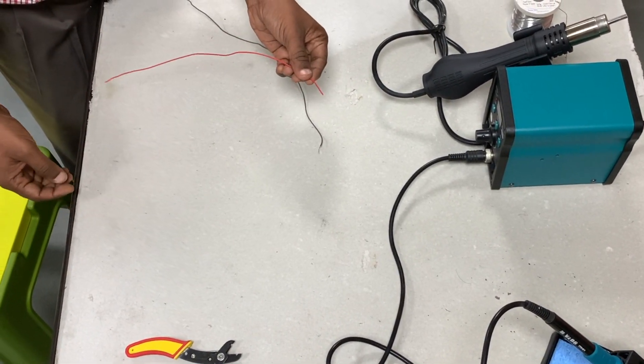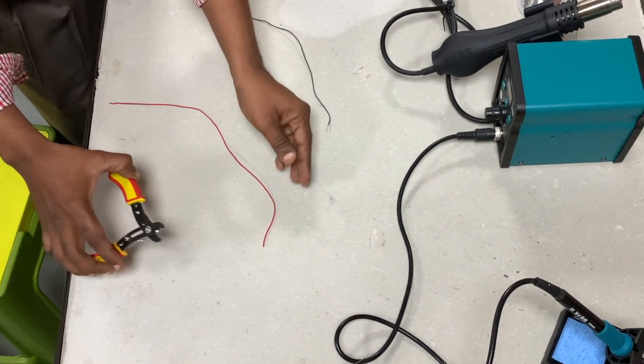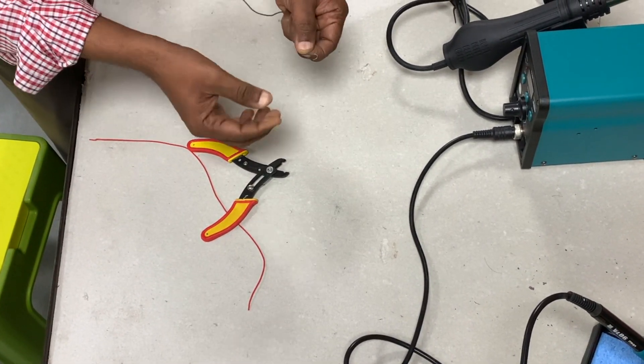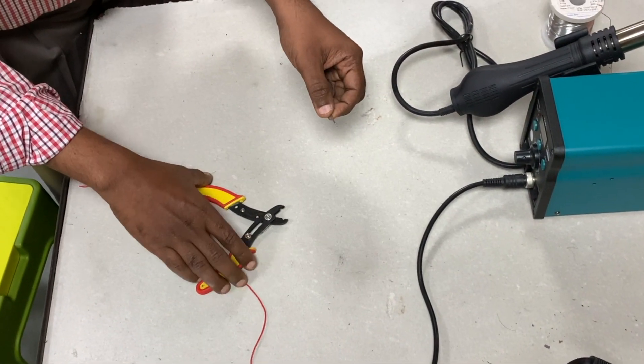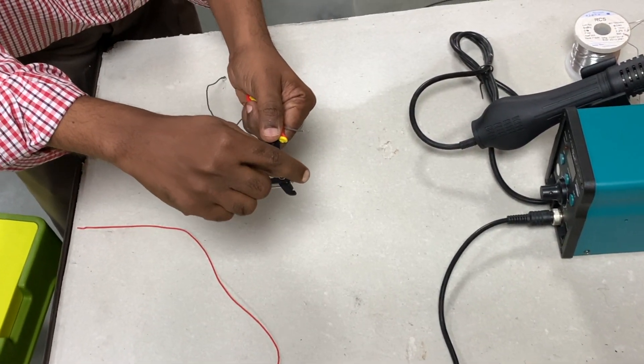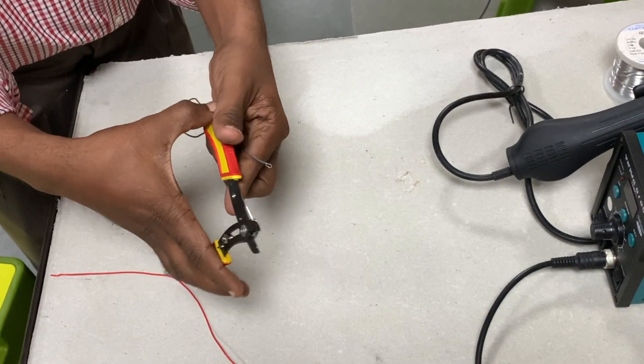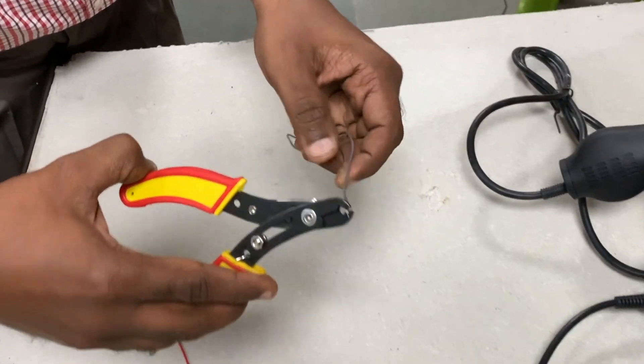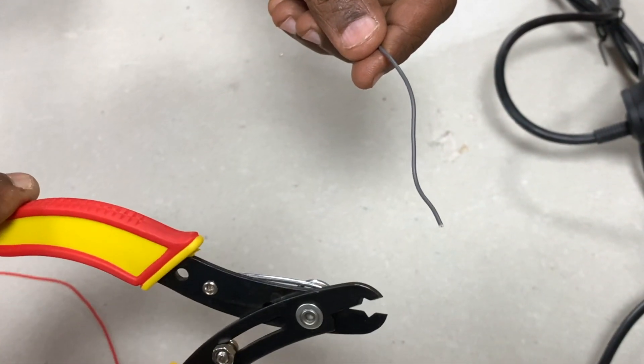So first I'm going to strip this wire. Initially, let's say there is a bad segment of the wire which you want to cut off. Use this end portion of the stripper. Put the wire like this and then cut it off.